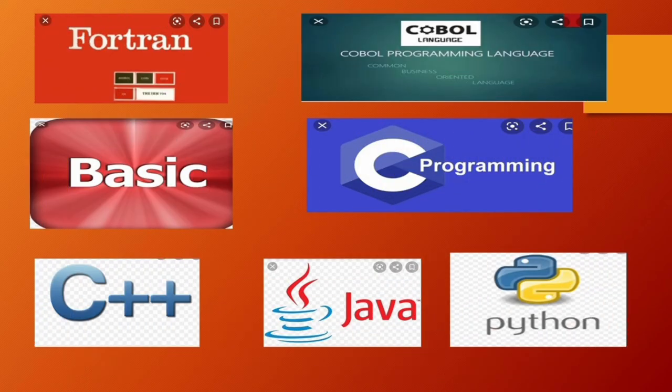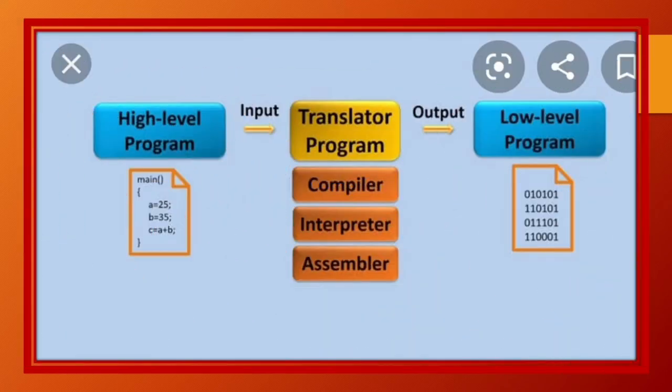Different high-level languages include Fortran, Cobol, Basic, C, C++, Java, Python, etc. However, program written in high-level language needs to be translated to machine language by using translators like interpreter and compiler. Means, interpreter and compiler ki help se high-level language program ko machine language mein convert kiya jata hai.